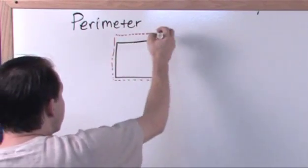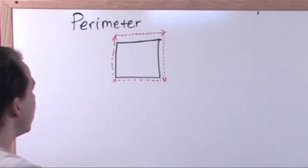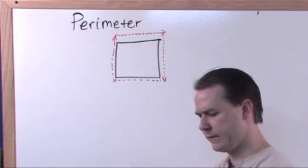And you start here and turn the corners like this, the perimeter is how far you've gone around. It is simply how far you've gone around this square.